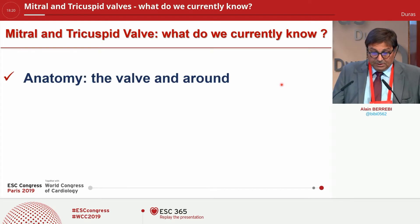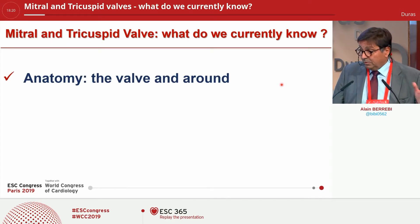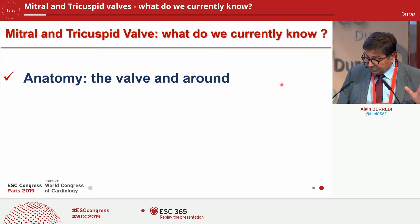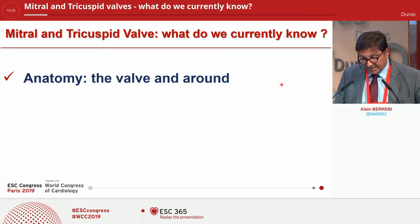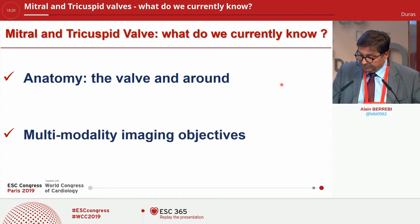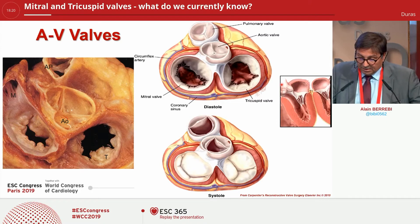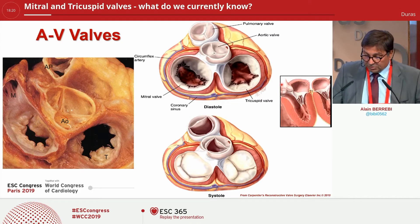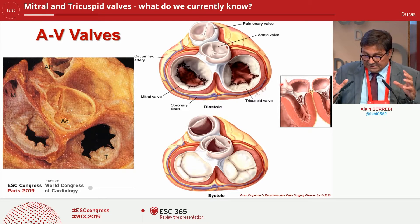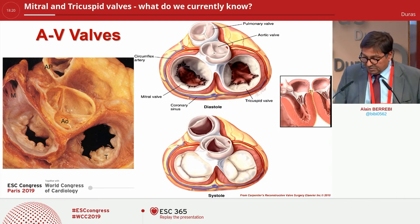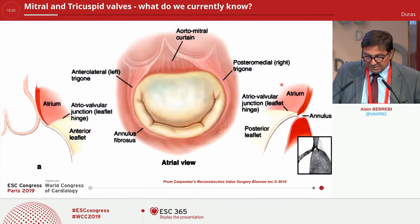So what do we currently know? We will focus on two parts: anatomy — the valve and the annulus — and the role of multimodality imaging. Mitral and tricuspid valves are AV valves, and it is clear the connection with the ventricle is very important to consider in the assessment with multimodality.